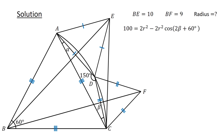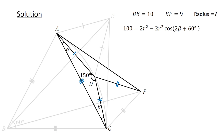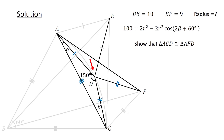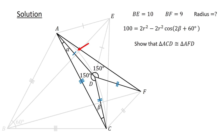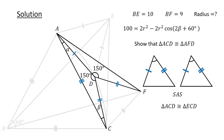Following this, connect A to F and then consider triangles ACD and AFD. Let us show that these triangles are congruent. Recall that angle ADE equals 60 degrees and angle EDF equals 90 degrees. Thus, angle ADF equals 60 degrees plus 90 degrees, or 150 degrees. Since AD is common to both triangles, CD equals FD, and the included angles are equal. By the SAS congruency test, the two triangles are congruent.